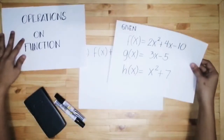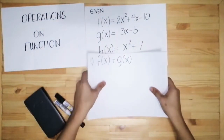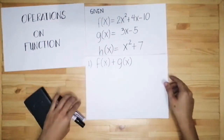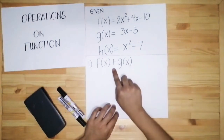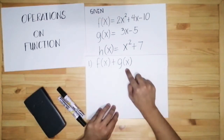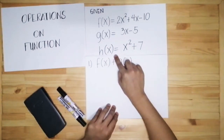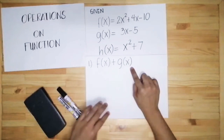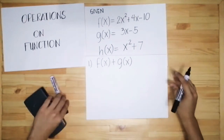Let's have the first example. The operation involved in the first example is addition. What are we going to add? f of x and g of x. For this example, we will not be using h of x because it's not part of the given. So let's solve f of x plus g of x.